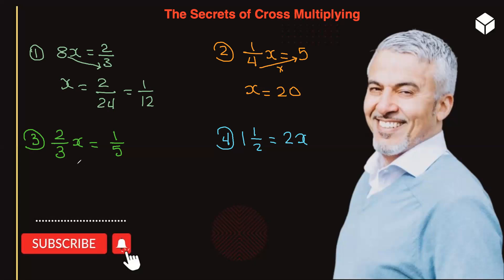Now, how about here? Here you have 2/3 with the x, and we want to isolate the x. So both of these have to cross. Therefore, x is isolated now. 3 crosses and goes to the top. 3 times 1 is 3. And 2 crosses to the 5. So 2 times 5 is 10.